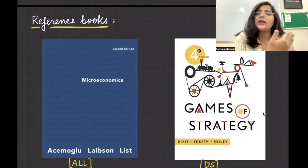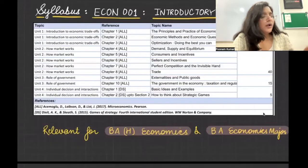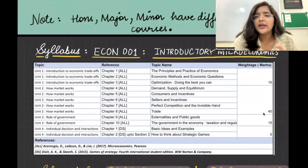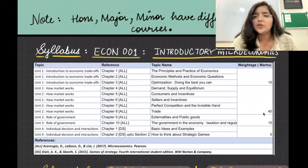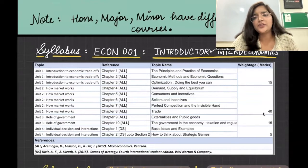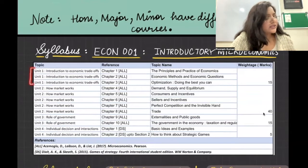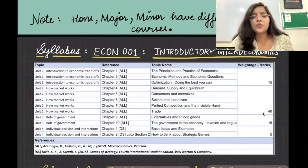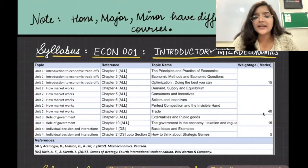Your course forms the basis for all the microeconomics courses you study later on. It covers basic economic trade-offs, how markets work, the government's role, and how individuals interact. The course is divided into four units: Unit 1 is Introduction to Economic Trade-offs, Unit 2 is How Markets Work — which is the most content-heavy unit — Unit 3 is Role of Government, and Unit 4 is Individual Decision and Interactions.